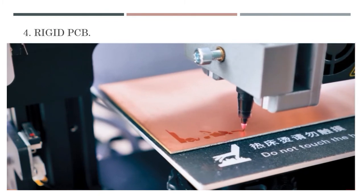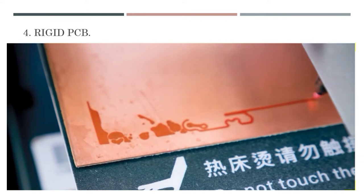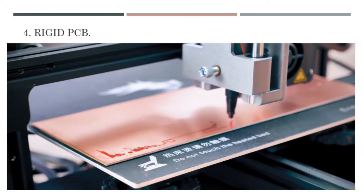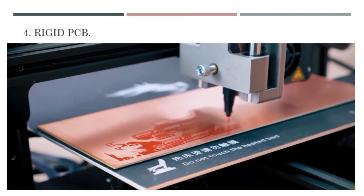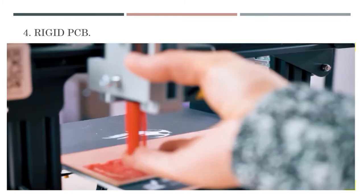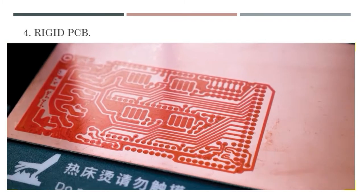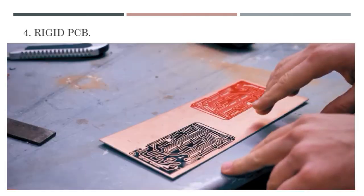Rigid PCBs make up perhaps the largest number of PCBs manufactured. These PCBs are used anywhere that there is a need for the PCB itself to be set up in one shape and remain that way for the remainder of the device's lifespan. Rigid PCBs can be anything from a simple single layer PCB all the way up to an 8 or 10 layer multi-layer PCB.